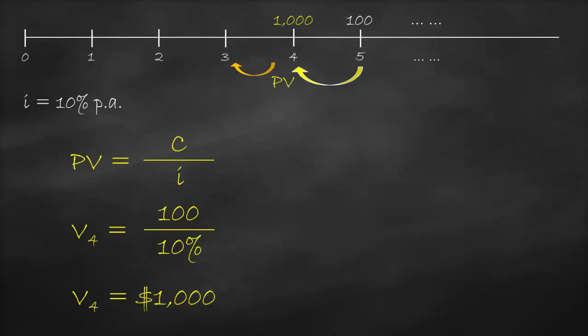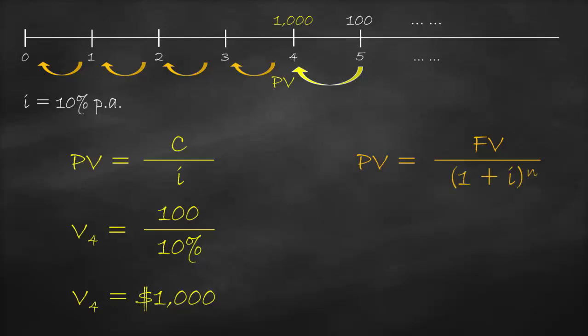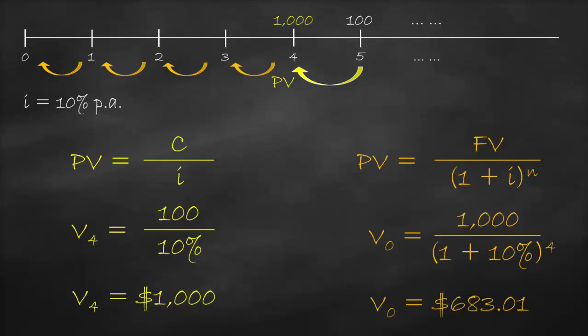The present value of a single cash flow formula is: PV = FV / (1 + i)^n. From year four to year zero is four years, so n = 4. Therefore, the value in year zero equals the value in year four — which is 1,000 — divided by (1 + 10%)^4. This gives us the value in year zero equal to $683.01.